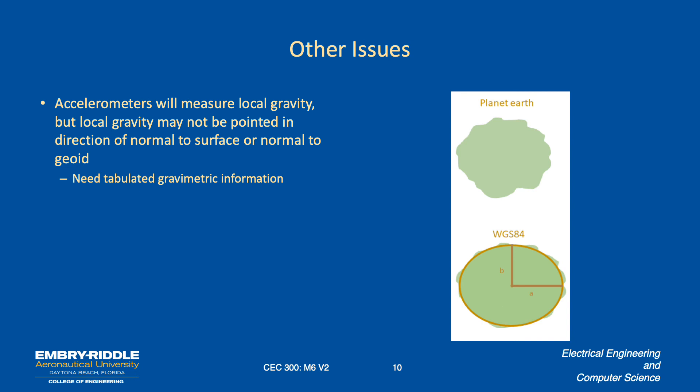Other issues are, as we move around the Earth, the gravity may not point towards the same as the normal to the ellipsoid. So we need tabulated gravimetric information. And that's available, just like the WGS 84 model, there's also gravitational information available.